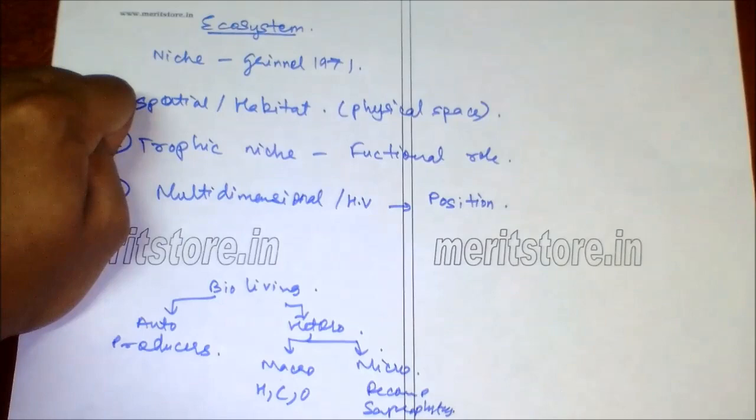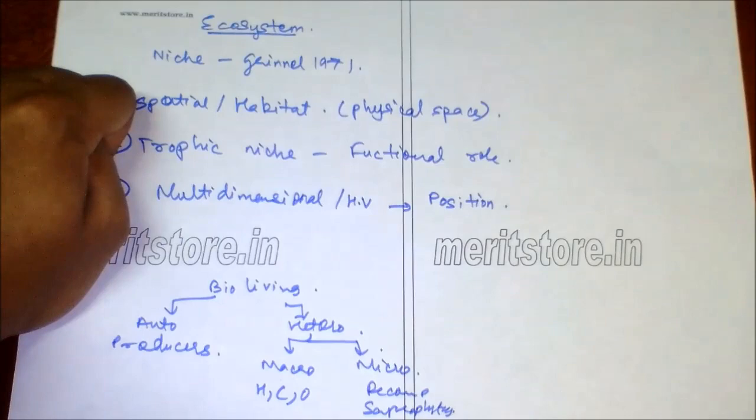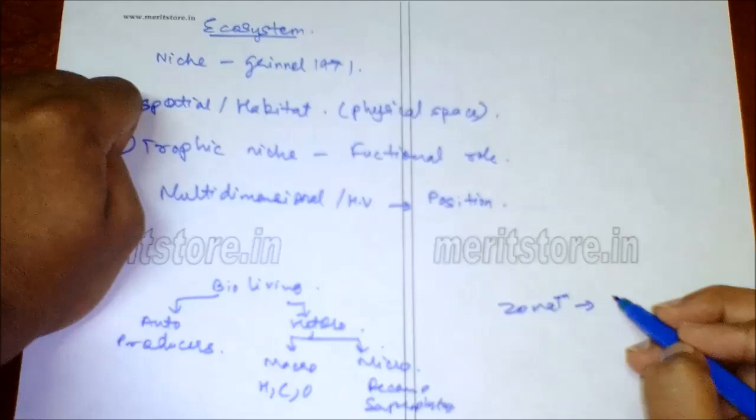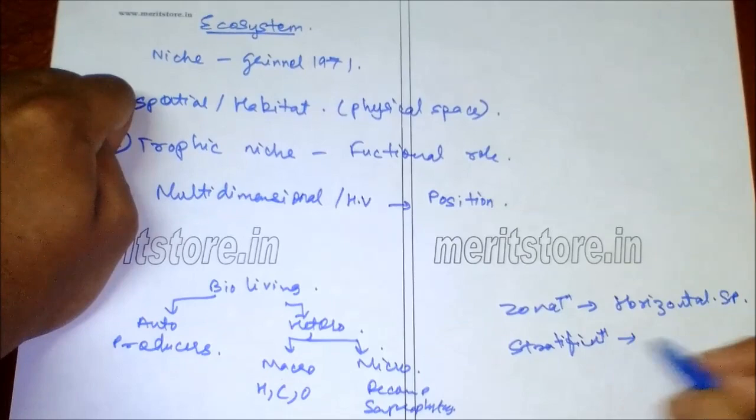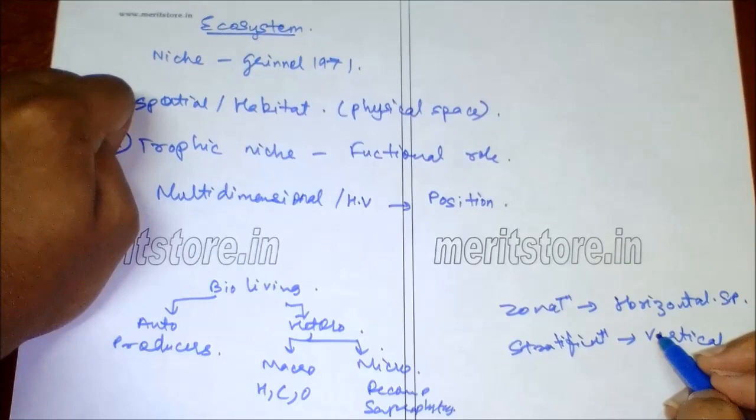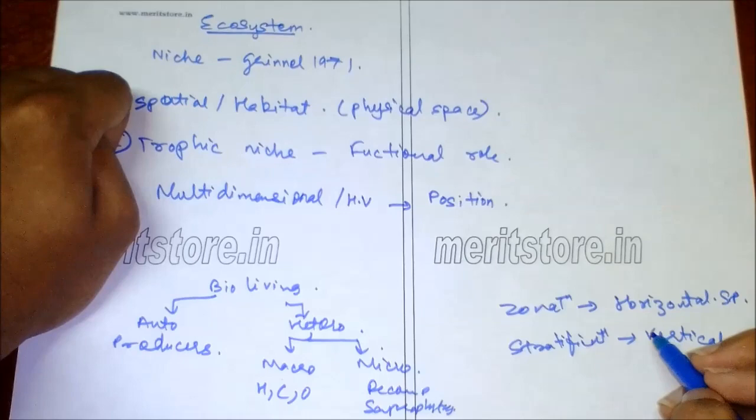Zonation is the term which means horizontal spatial pattern, and stratification is the vertical spatial pattern. Non-living matter includes abiotic components, which are climate, organic compounds like lipids and proteins, and inorganic substances.